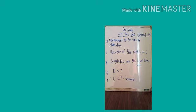Longitudes and local time: For each degree of longitude, the local time differs by 4 minutes. By multiplying the difference between longitudes in degrees by 4 minutes, the difference between the local times of any two longitudes can be calculated.